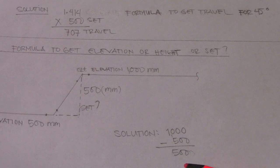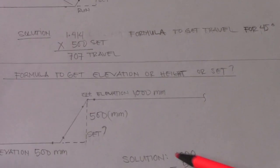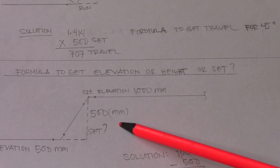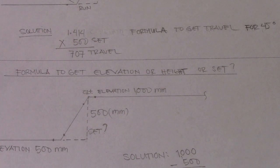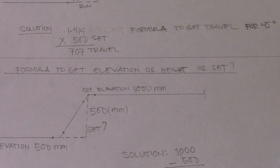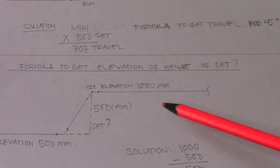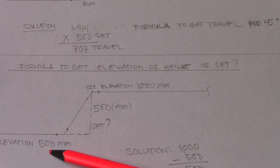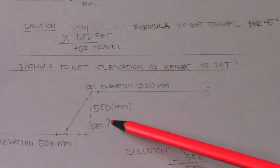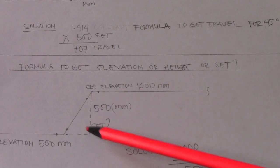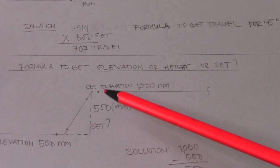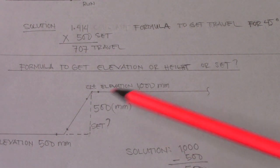The solution is simply to subtract: 1000 minus 500 equals 500. So our elevation or set is 500. When you have two given elevations and need to find the set, just subtract them to get the answer.